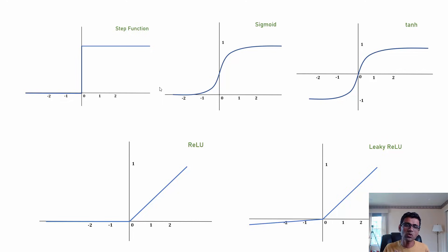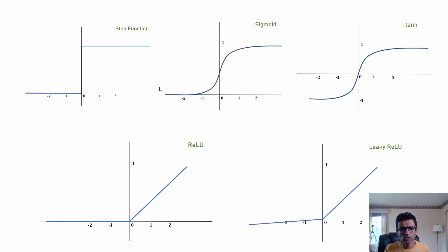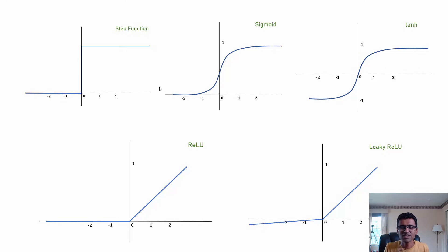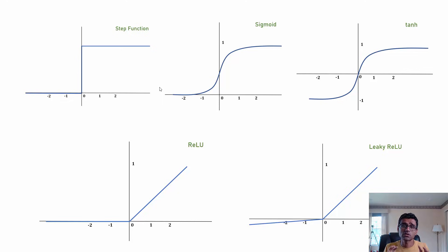Here is a quick summary of all activation functions and which to use for your problem. For binary classification in the output layer, you will probably use sigmoid. For hidden layers, you will most likely use ReLU or Leaky ReLU. However, there isn't always a clear answer — neural network training involves trial and error, so you have to try different activation functions and see which gives the best output.